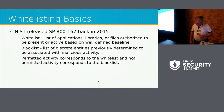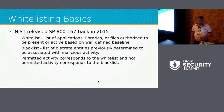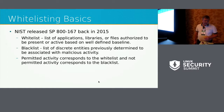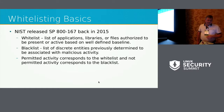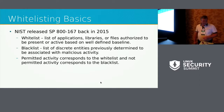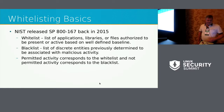A couple years ago, NIST released Special Publication 800-167, which is useful because it defines a few terms and talks about different things that application whitelisting should take into account. They define a whitelist as the list of applications, libraries, or files authorized to be present or active based on a well-defined baseline. A blacklist is a list of discrete entities previously determined to be associated with malicious activity. Permitted activity corresponds to a whitelist, and not-permitted activity corresponds to a blacklist.